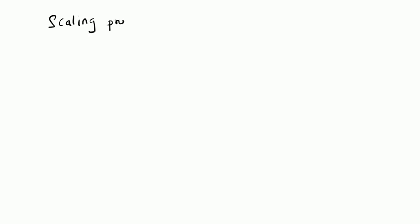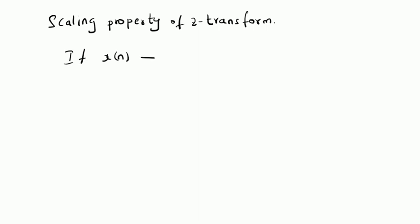Hello, welcome. In this video, let us look at the scaling property of the Z-transform. The property can be stated as follows: if x of n has a Z-transform X of z with ROC defined by R1 less than mod z less than R2, that is a general ring-like structure between the two circles of radii R1 and R2, then the Z-transform of a^n times x of n is...